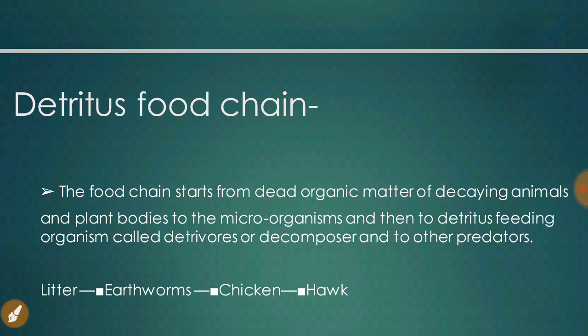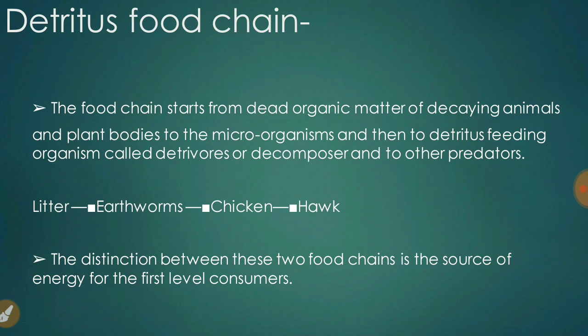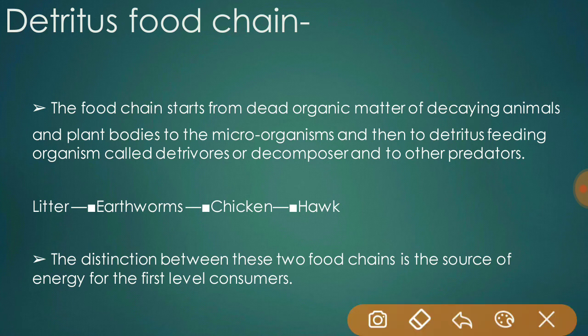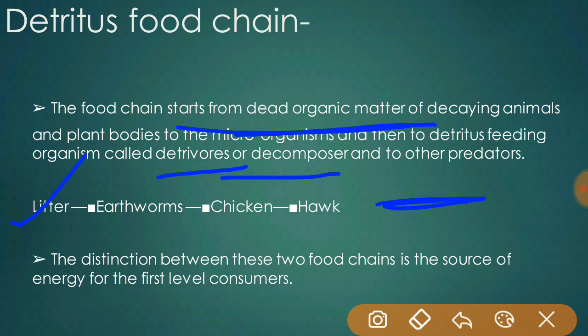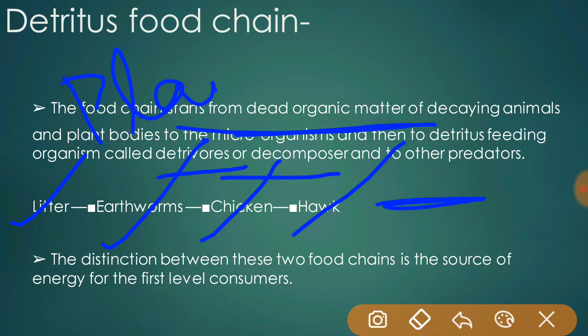The second type is the detritus food chain. This food chain starts from dead organic matter of decaying animals and plant bodies, then goes to micro-organisms and then to detritus-feeding organisms called detritus decomposers, and then to other predators. Example: litter eaten by earthworm, then eaten by chicken, then eaten by hog. The key distinction is the source of energy: in grazing food chains it is living plants, while in detritus food chains it is dead organic matter.